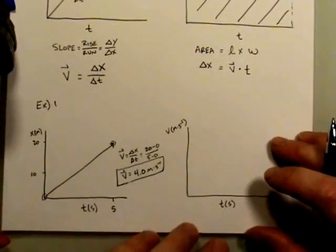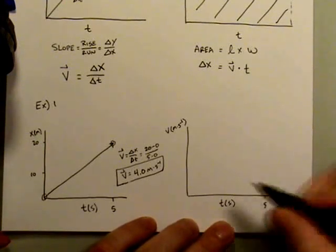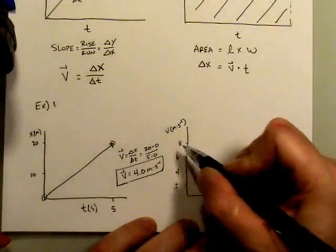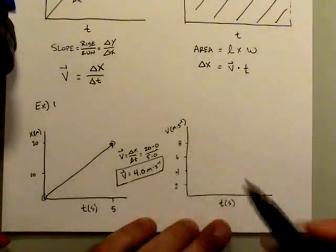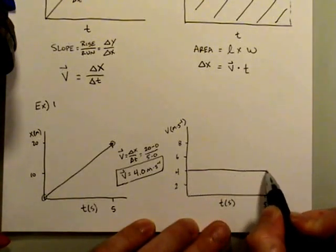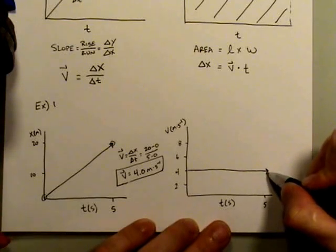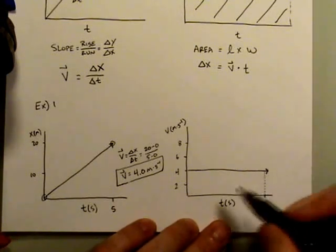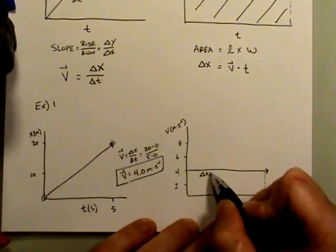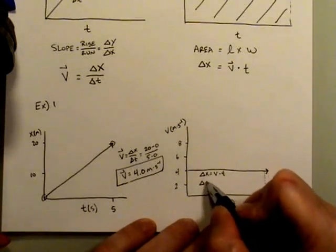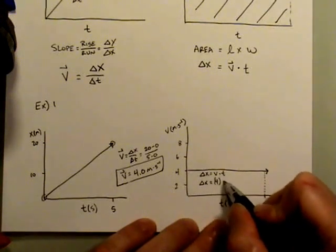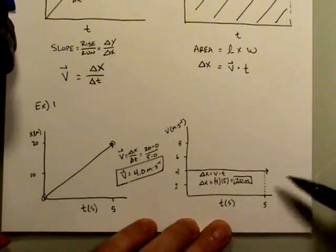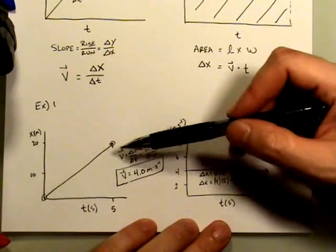On the velocity-time graph, we have the same 5 seconds. The velocity of the object is 4 meters per second, shown as a horizontal line. The displacement from the velocity-time graph: delta x equals v times t, equals 4 times 5 seconds, which is 20 meters — exactly the same as what we got from the displacement-time graph.